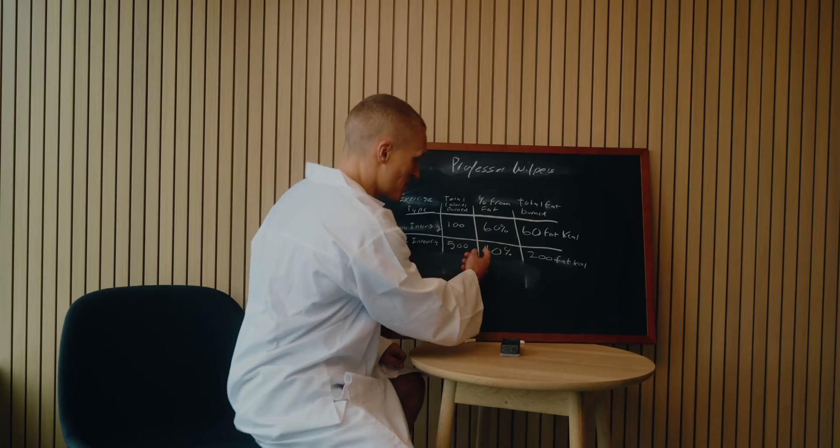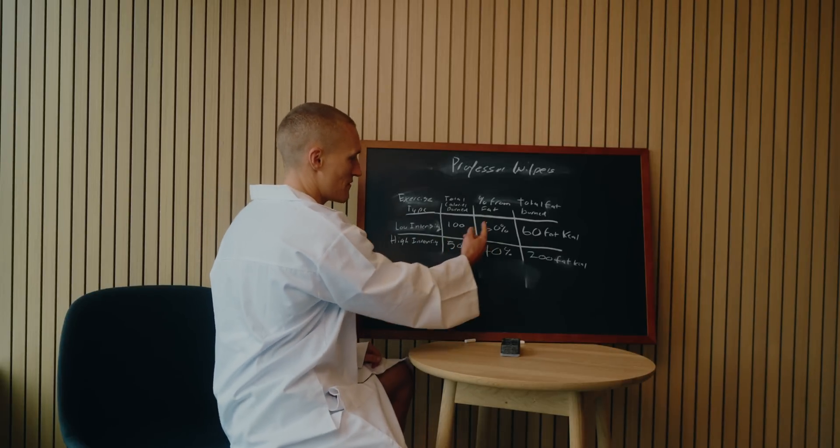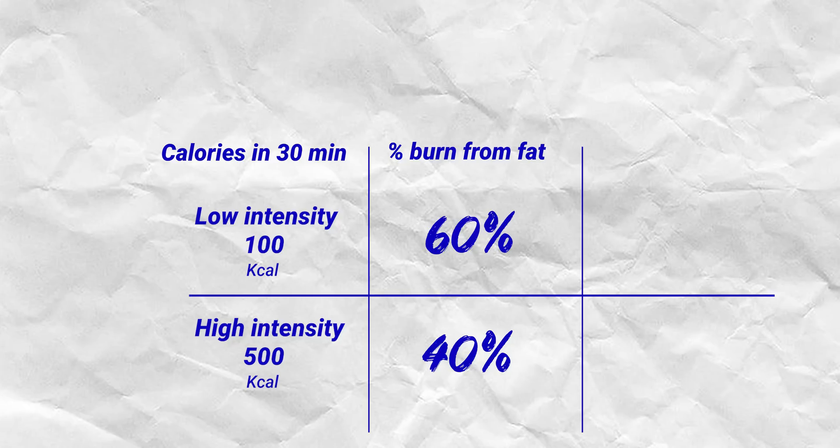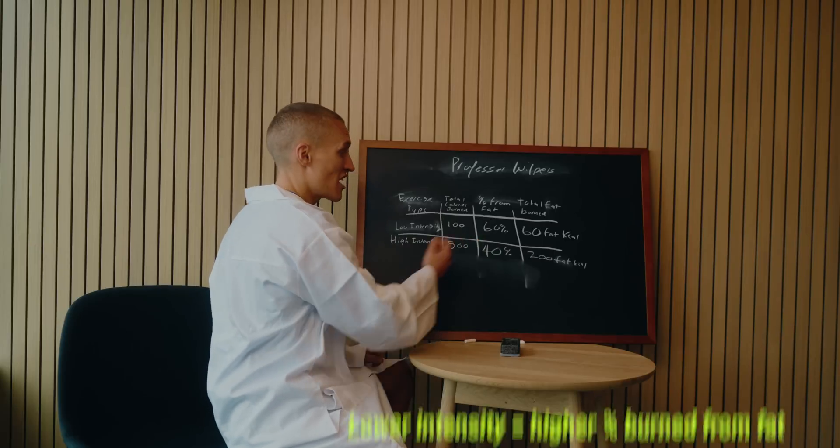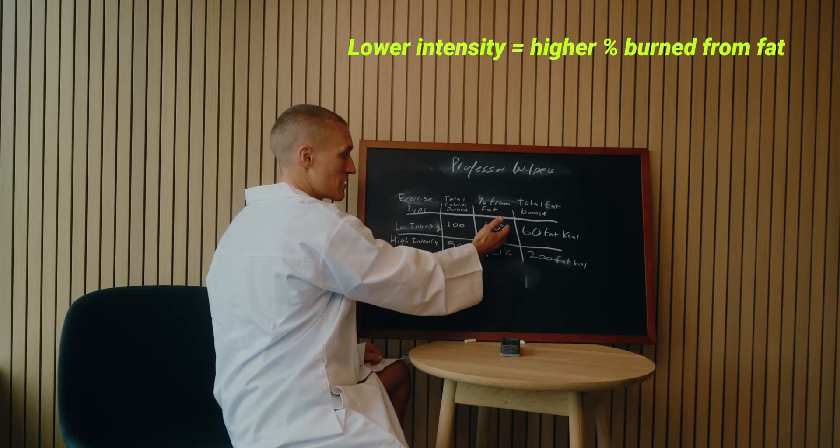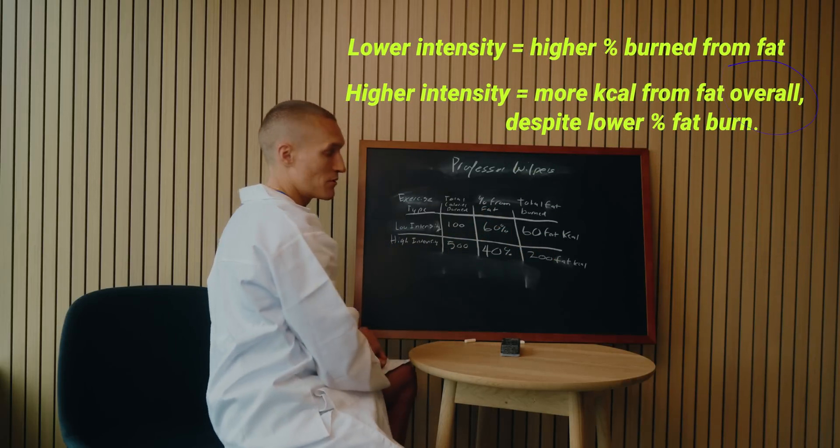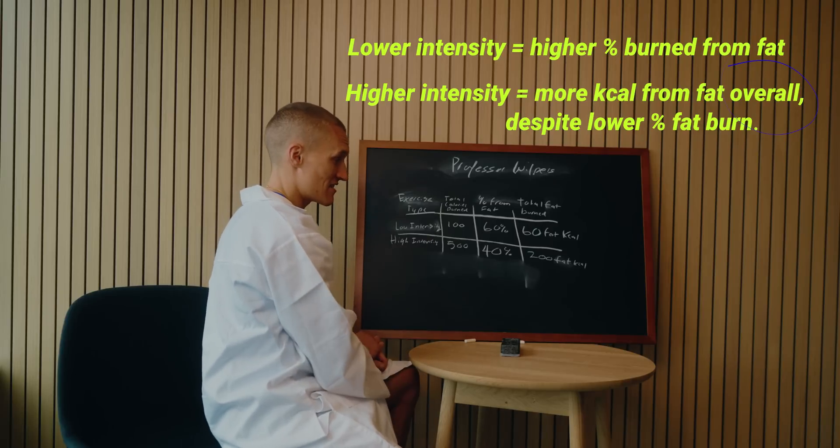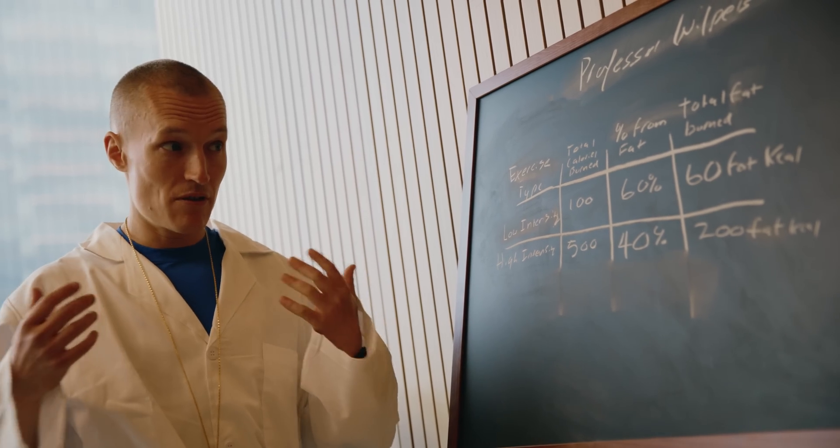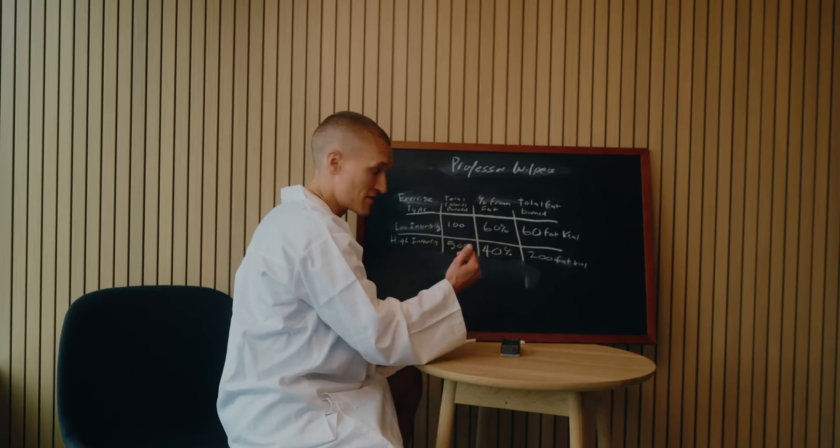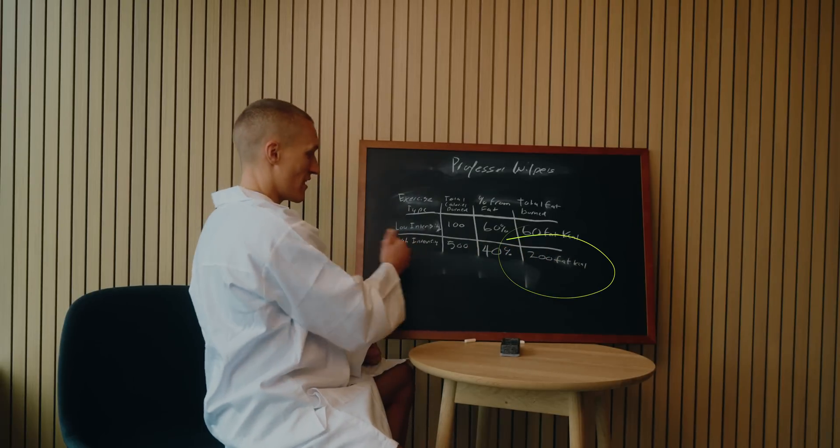So when we multiply the percentages, the 40 times the 500, the 60 times the 100, you're going to get 60 total kcals burned from fat versus 200 kcals burned from fat at the higher intensity. So even though we have a higher percentage of total caloric burn coming from fat at a lower intensity, there's more calories burned from fat at a higher intensity even though it's at a lower total percentage. Well, if we want to lose body fat and create a caloric deficit, we're going to get more calories burned from fat at a higher intensity.